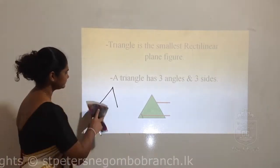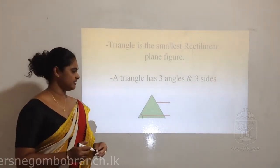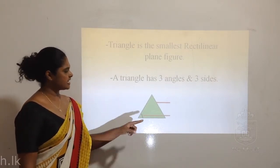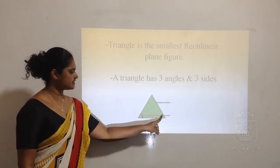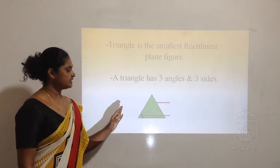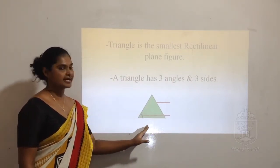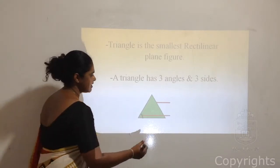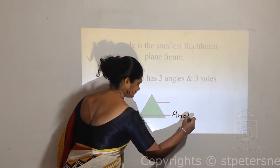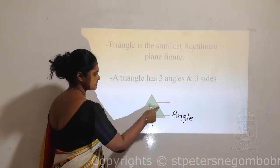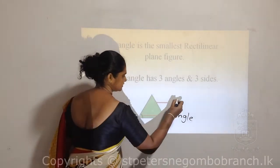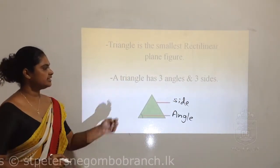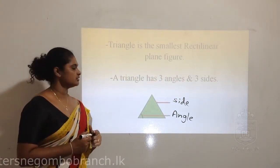So the smallest rectilinear plane figure is a triangle. Triangle has three angles and three sides. This is the angle, and this is the side. There are three sides and three angles in a triangle.